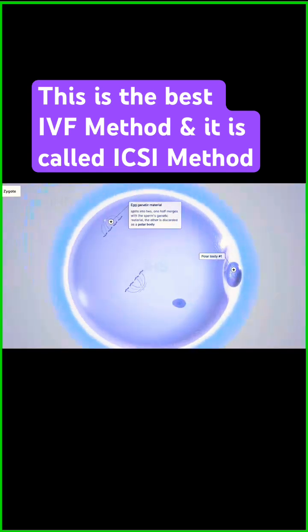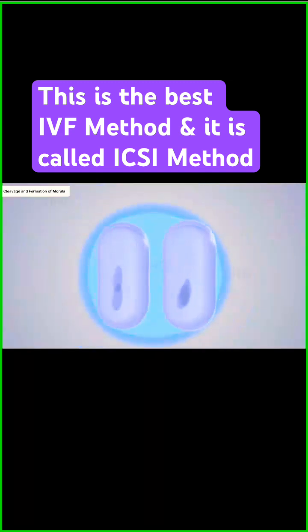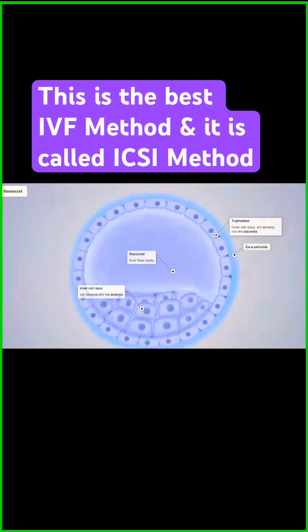The egg and the sperm form pronuclei and move towards each other to form a zygote with a complete set of chromosomes. The zygote undergoes cleavage, forming a morula, which then develops into a blastocyst.